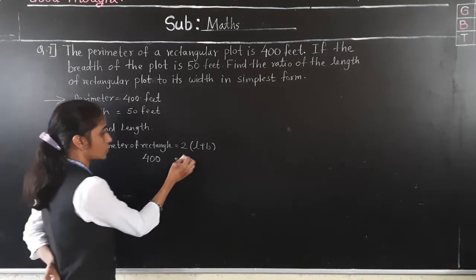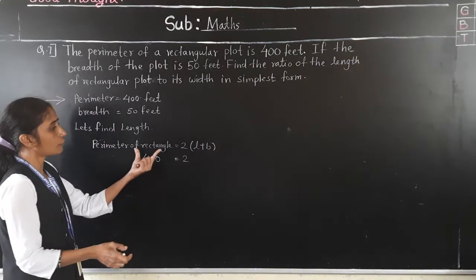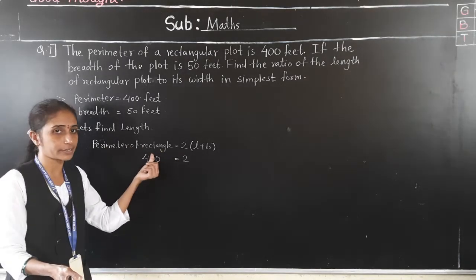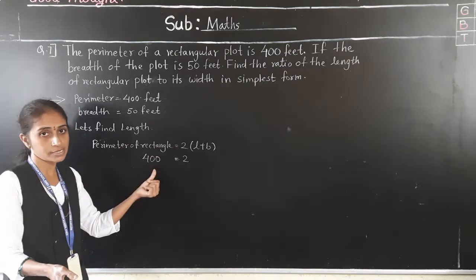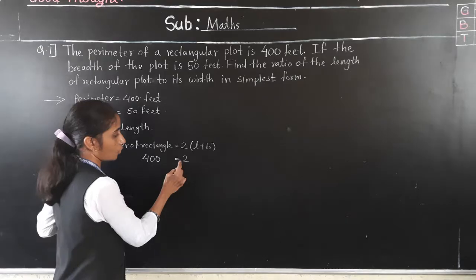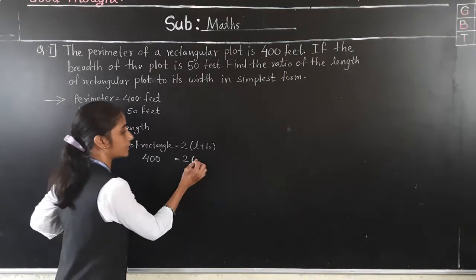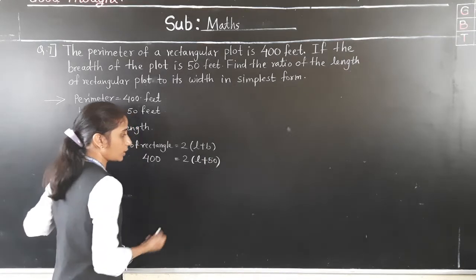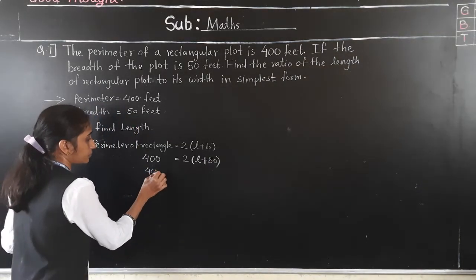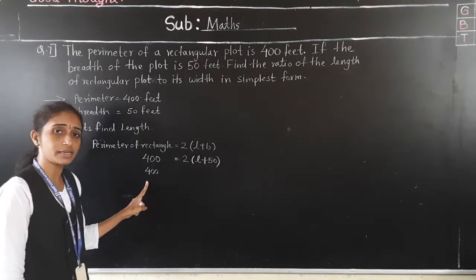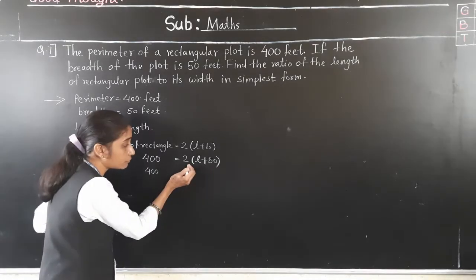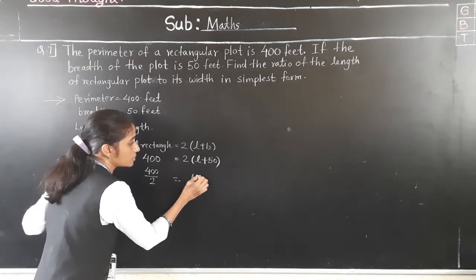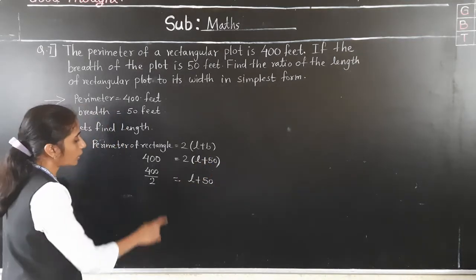Breadth is given. Using the formula: 400 = 2 × (length + 50). Transfer 2 to the other side — it becomes division. So length plus breadth equals 400 divided by 2, which is 200 feet. So L + 50 = 200 feet.